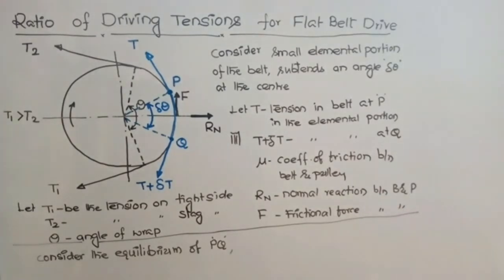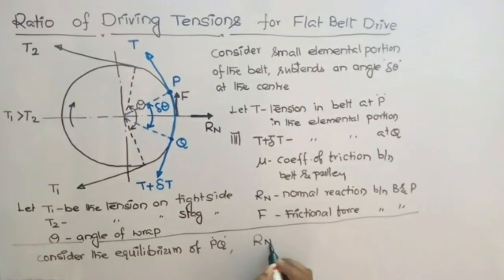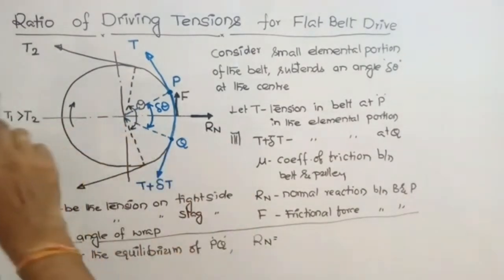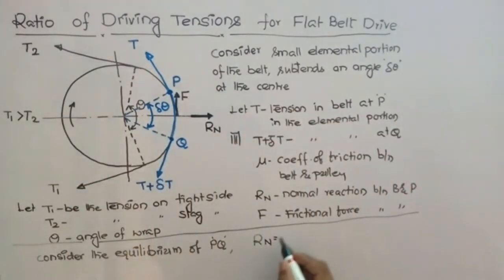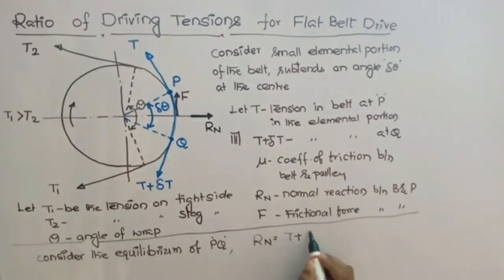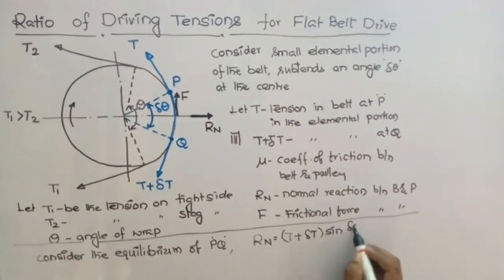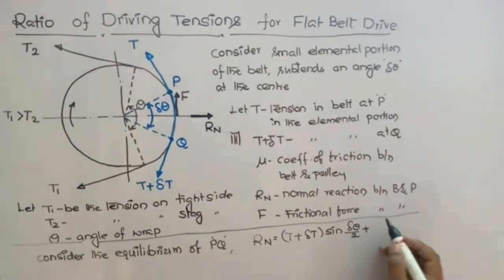Now you can resolve these forces horizontally and vertically, and you will get two equations. Resolving forces horizontally on this elemental portion: Rn is equal to (T plus delta T) into sin(delta theta by 2) plus T into sin(delta theta by 2).